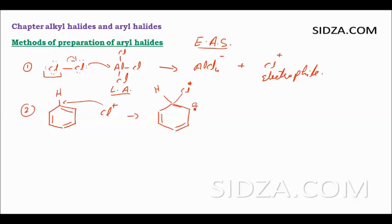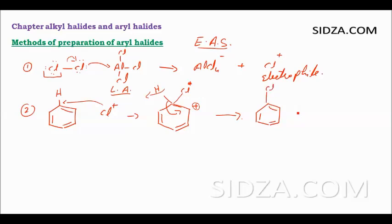This positive charge is delocalized by the ring through resonance — the canonical structures show the positive charge at the ortho and para positions. From this carbocation intermediate, the hydrogen is lost as H+. The electron pairs re-enter the ring forming a double bond, and chlorobenzene is obtained along with H+.